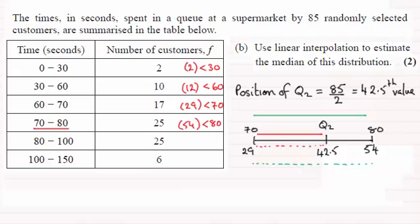And so all I need to do then is set up my equation, which will be this width, that's Q2 minus 70. And that is divided by this width down here, compared with this width, which is 42.5 minus 29, and that ratio is exactly the same as this ratio.